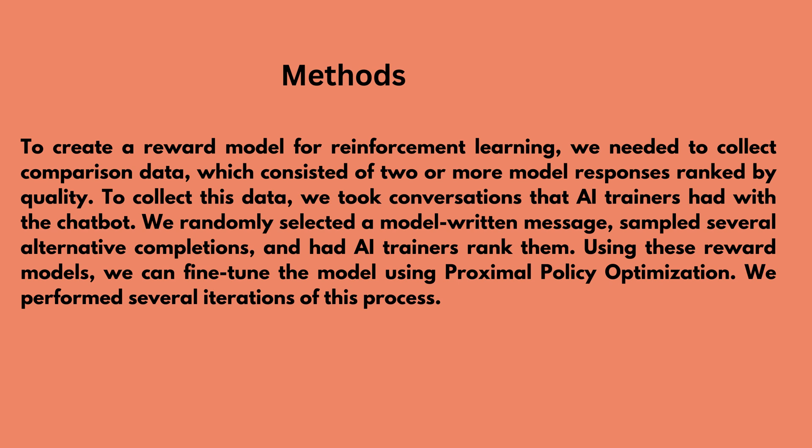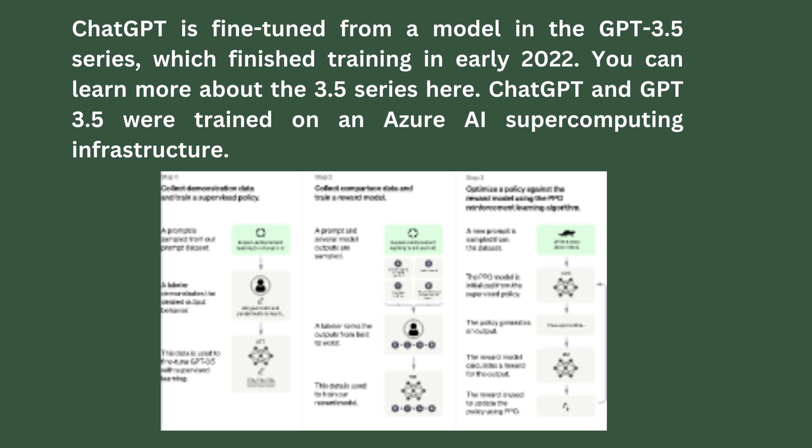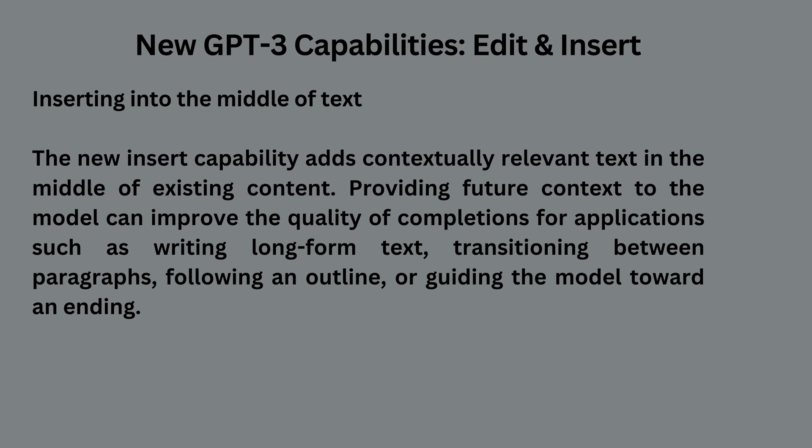To create a reward model for Reinforcement Learning, we needed to collect comparison data, which consisted of two or more model responses ranked by quality. To collect this data, we took conversations that AI trainers had with the chatbot. We randomly selected a model-written message, sampled several alternative completions, and had AI trainers rank them. Using these reward models, we can fine-tune the model using proximal policy optimization. We performed several iterations of this process.